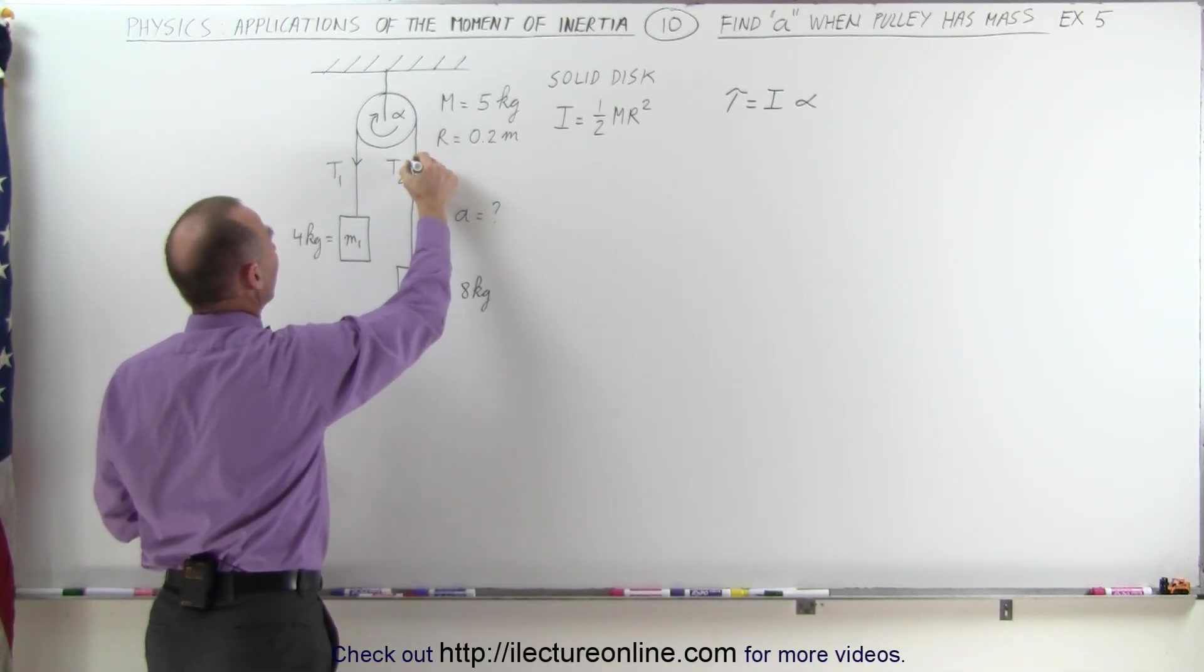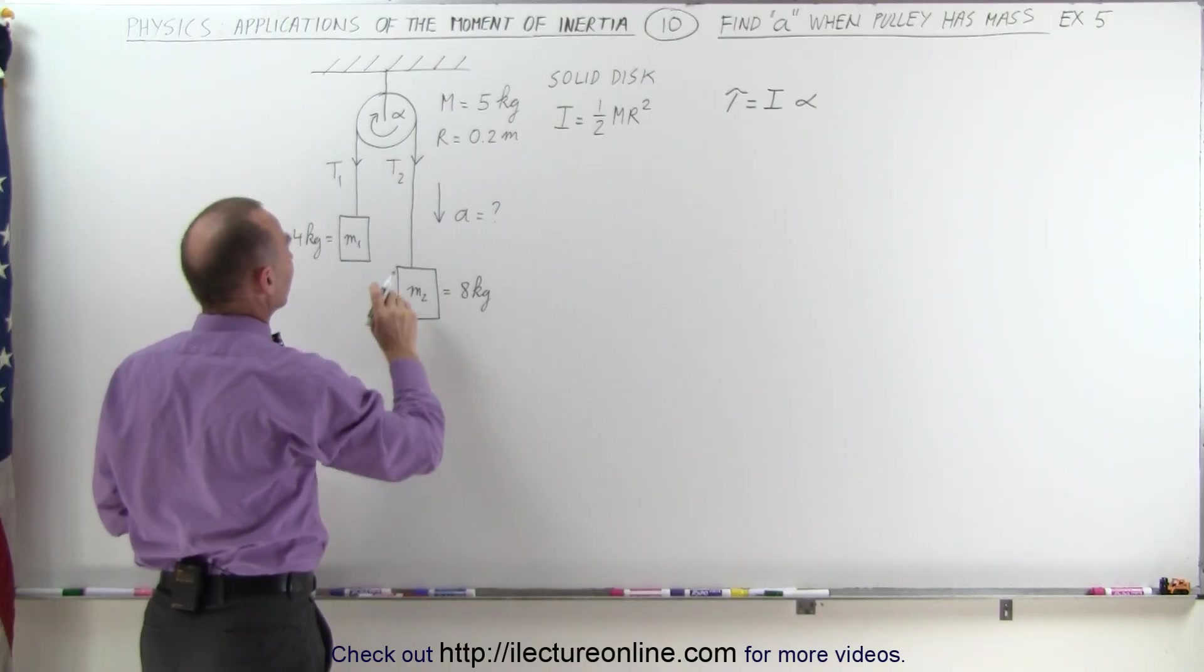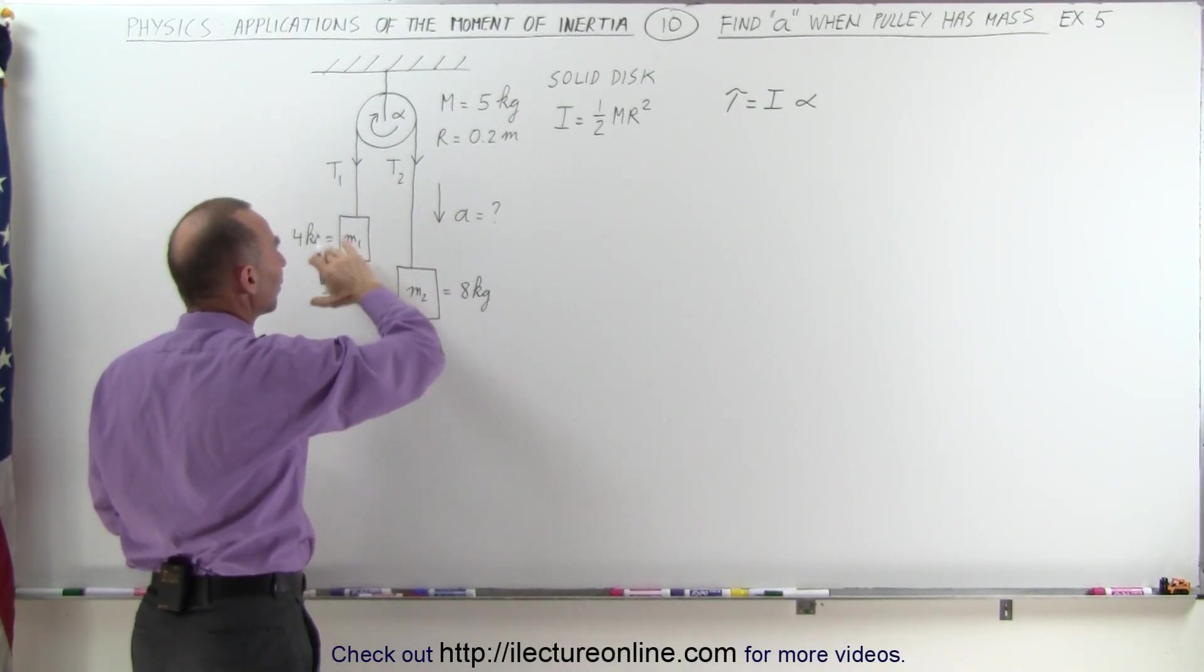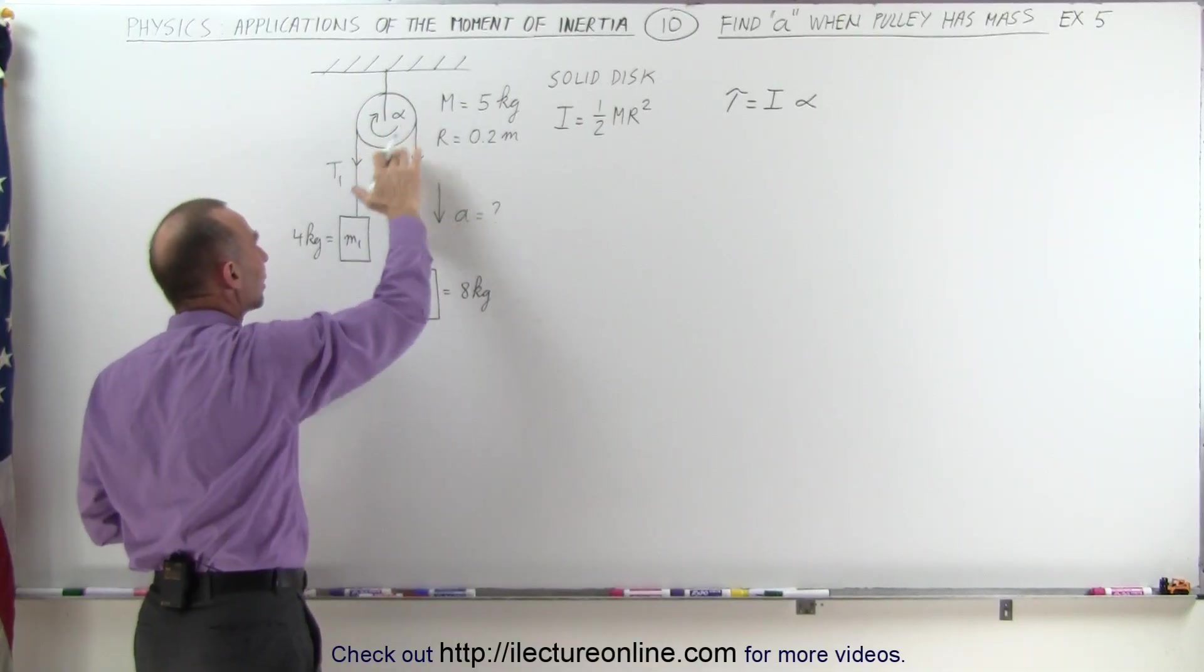Notice T1 is pulling in this direction. T2 is pulling in this direction. T2 is assumed to be larger than T1. Therefore there will be a net torque in a clockwise direction.